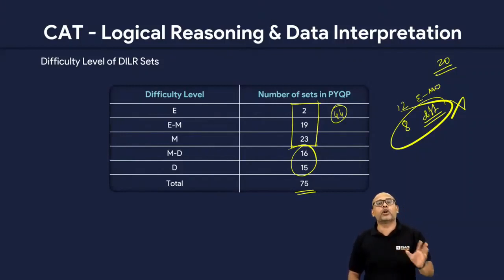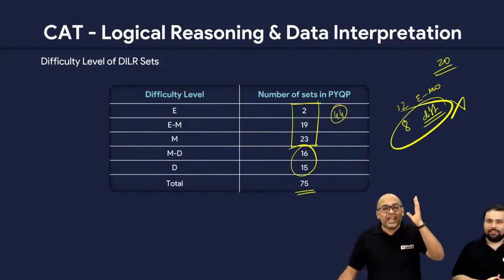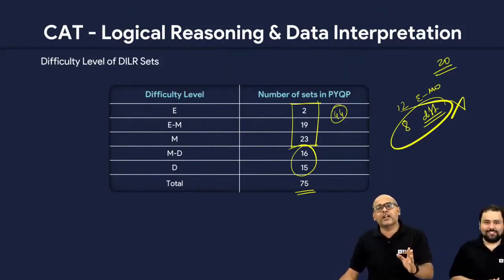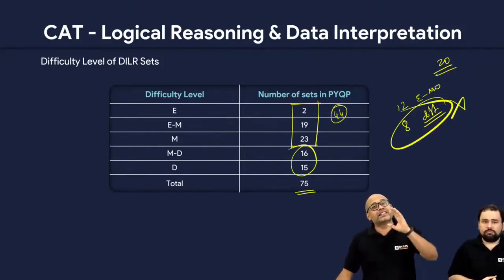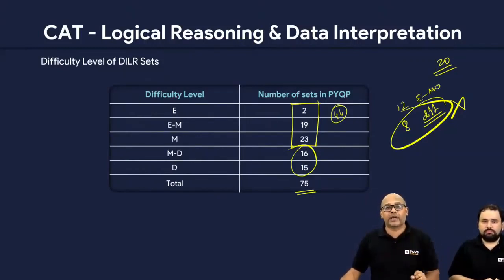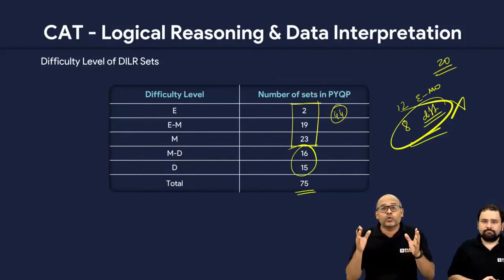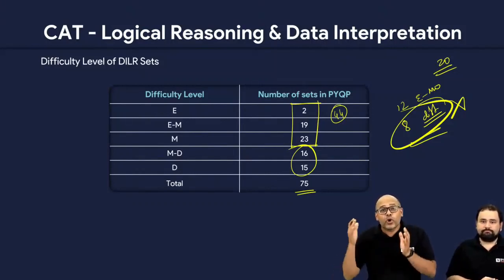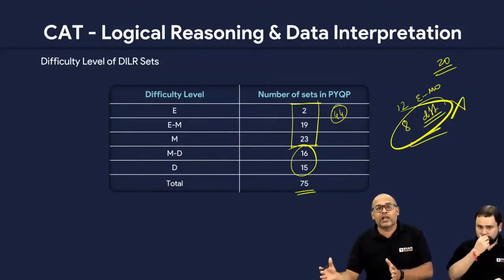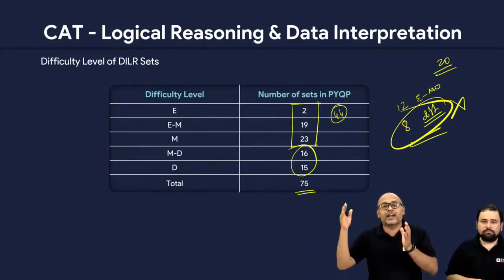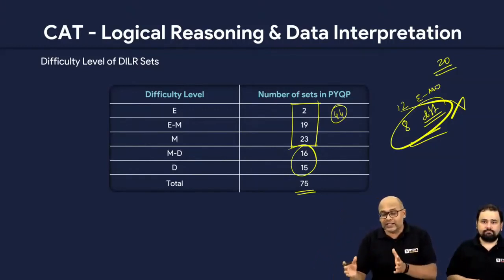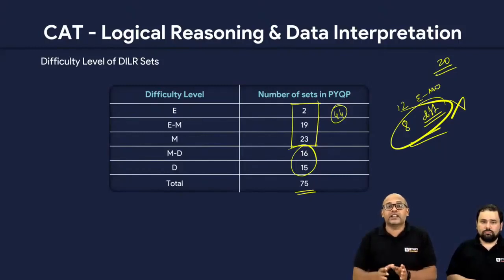What you need to realize — and this happens to a lot of students — the confidence you need is: in any paper, there will definitely be around 8 to 10 sets which are dead easy that you should pick up. This is guaranteed. If you pick 8 difficult ones first, don't worry — be happy. You know for sure the next 12 you'll crack. You passed the difficult ones — it's okay. But if you don't have that confidence, you'll mess up the entire paper.